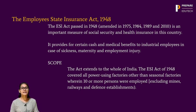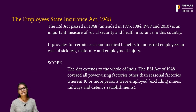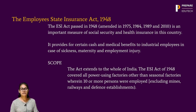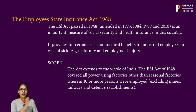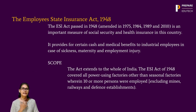The ESI Act of 1948 covered all power-using factories, other than seasonal factories, wherein 10 or more persons were employed, excluding mines, railways, and defense establishments. So initially in 1948, it covered power-using factories where electricity was used.